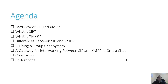We'll cover what is SIP, what is XMPP, the difference between them, and how we can build a group chat system using the SIP or XMPP protocol. Then we discuss a gateway for interworking between the SIP and XMPP protocol in group chat, why we need a gateway, and finally conclusion and references.